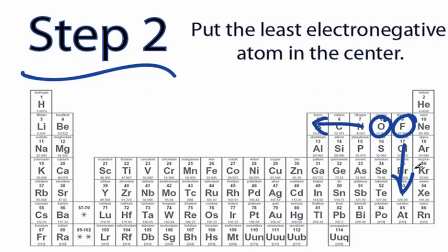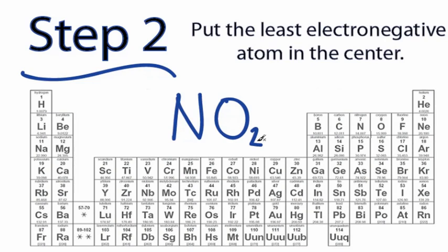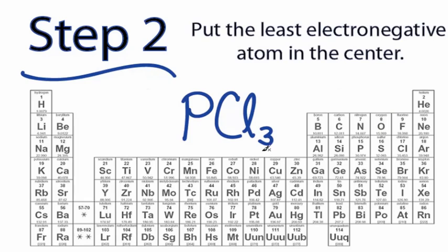Let's see how it works. When I draw the Lewis structure for something like NO2, I can see that nitrogen is further away from fluorine than oxygen. That means when I draw my Lewis structure, I'll put nitrogen at the center and oxygens on the outside. For something like PCl3, I can see that phosphorus is further away from the fluorine than the chlorine atom. So I'll put phosphorus at the center and the chlorines on the outside, like this.